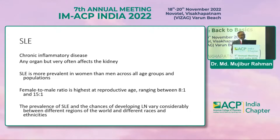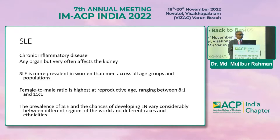You all know that SLE is a chronic inflammatory disease. It can affect any organ of the body, especially major organs like the kidney, the brain, and also the cardiovascular system and myocardium. SLE is more prevalent in women. The male to female ratio on average is 9:1, but it varies by race and from epidemiological region to region.